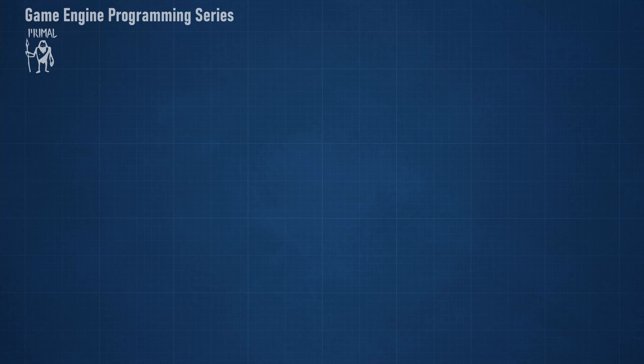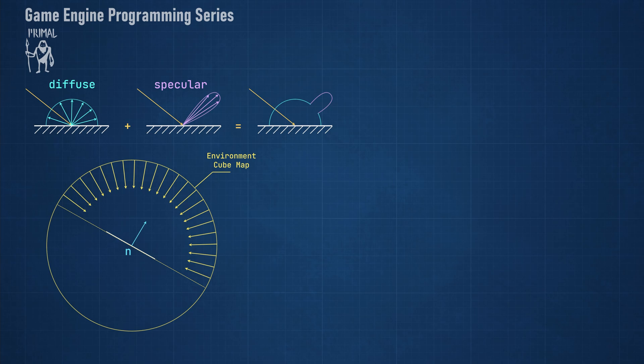Hello everyone and welcome to the game engine programming series where we write a game engine from scratch. In the last video we had an introduction to important sampling and we learned how it is applied for sampling Lambert's diffuse BRDF on a spherical hemisphere.